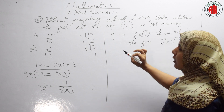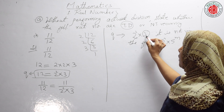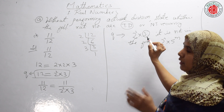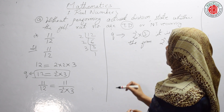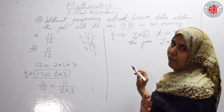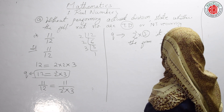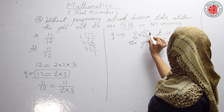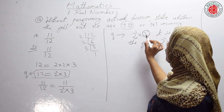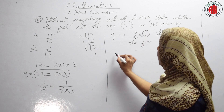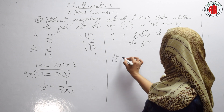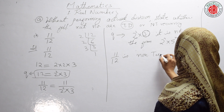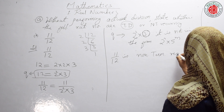You can see here 2 is present, but other than 2, there is also 3. So we can say it is not a terminating decimal. Only 2 and 5 should be there — 2 is present but 5 is not, and 3 is there which we do not need. Therefore, 11/12 is a non-terminating repeating decimal.